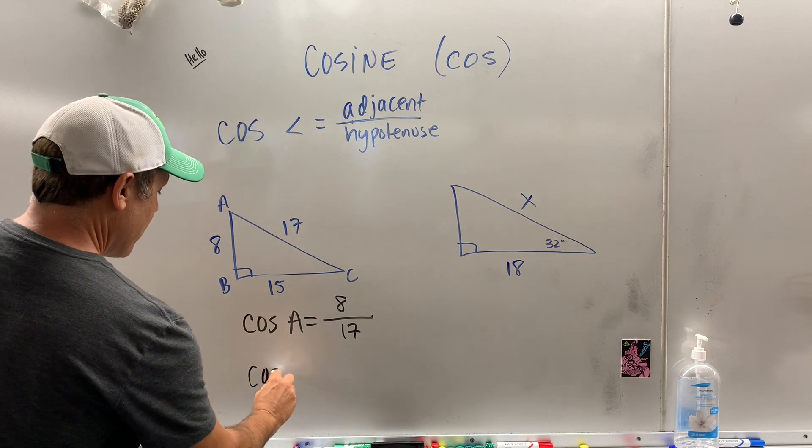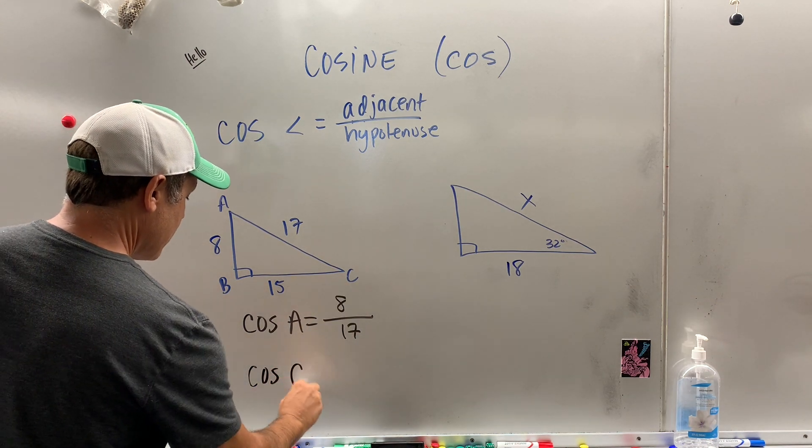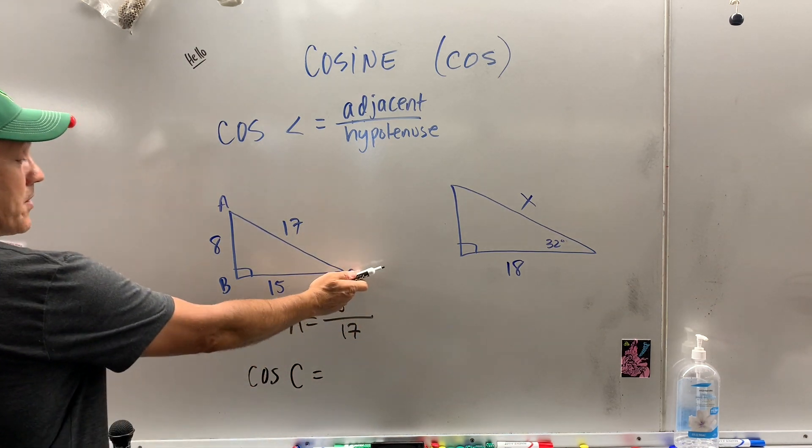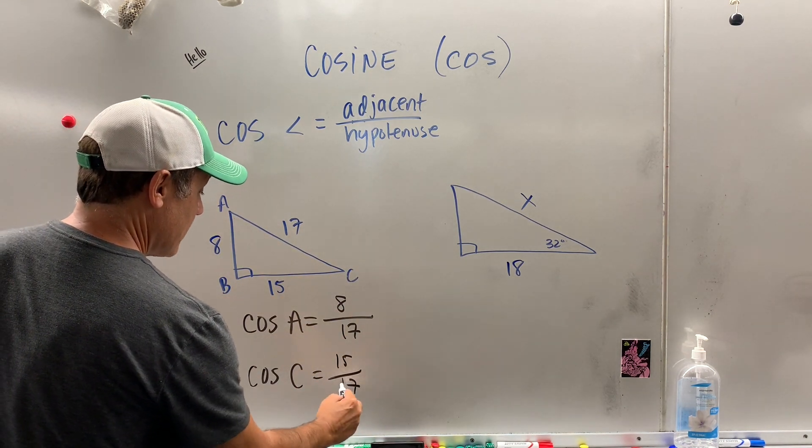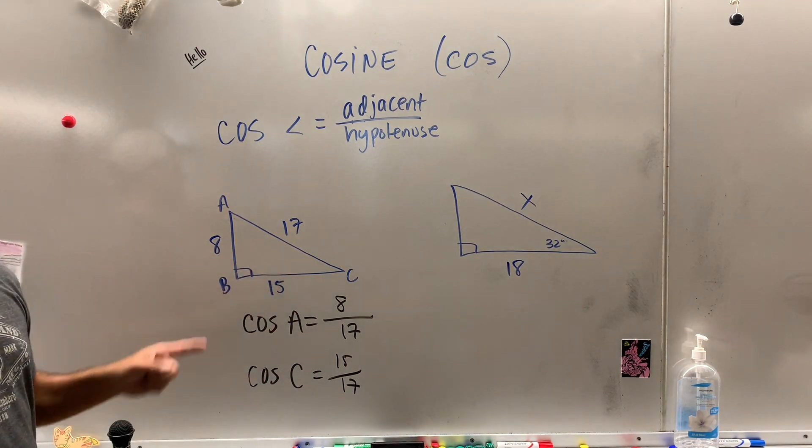Now, what if we wanted to find the cosine of angle C? Now my finger's here. Now what's the adjacent? 15, but the hypotenuse hasn't changed. So that's how you can find the ratios.